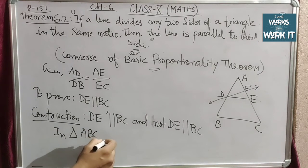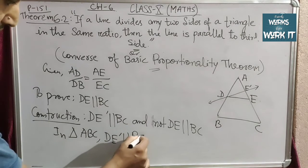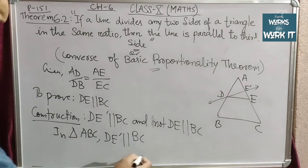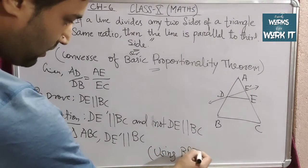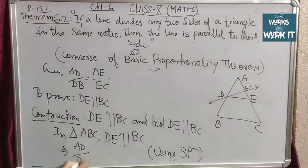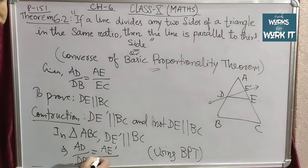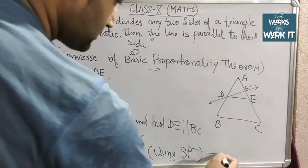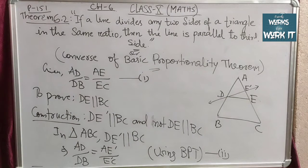In triangle ABC, from the construction, DE' is parallel to BC. Using the concept of BPT, we can write: AD/DB = AE'/E'C. We will take the given condition as equation (1) and this result from BPT as equation (2).